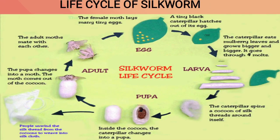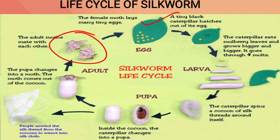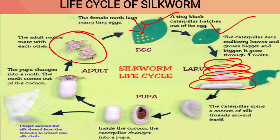Here you can understand this with the help of this diagram. An adult moth mates and lays eggs on mulberry leaves. The eggs hatch into caterpillars which eat mulberry leaves, grow day by day into a larva. The larvae start secreting a protein around their bodies — small fluffy fibers surround their body, forming a cocoon. Inside the cocoon, the larva is now called a pupa.